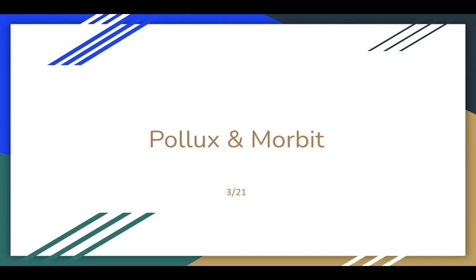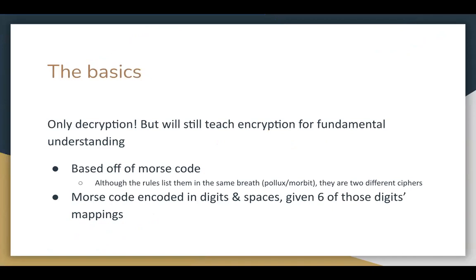This week we're covering Pollux and Morbid — they're very similar with only slight differences, and both are based on Morse code. Next week will be the railfence cipher, which is another one that's not really math while solving it, but it's based in math a little. I think railfence is one of the most puzzly ciphers — it's not very bashy, meaning no trial and error. You just have to look at the thing and try to rearrange it, almost like an anagram.